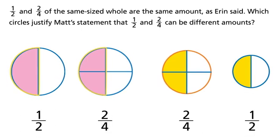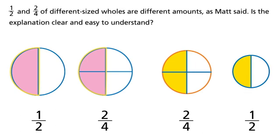Which circles justify Matt's statement that one-half and two-fourths can be different amounts? One-half and two-fourths of different size wholes are different amounts, as Matt said.